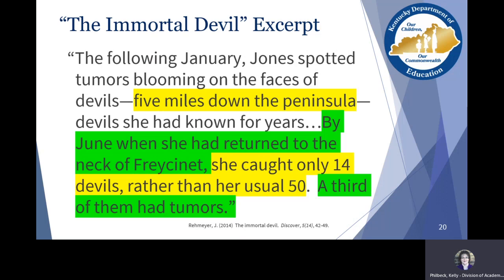Going through this excerpt: 'five miles down the peninsula' — that's a use of numbers or a location. 'The neck of Freycinet' — I'm underlining that. 'She caught only 14 devils rather than her usual 50' — those numbers are telling us a story and giving evidence. When we look at 14 compared to 50, we can definitely tell that's a huge difference, so something's going on. That's further explained by 'a third of them had tumors,' further illustrating the problem by giving locations, numbers, and comparisons of past versus present.